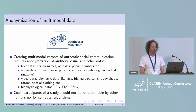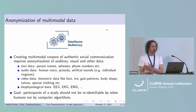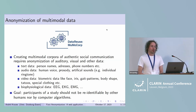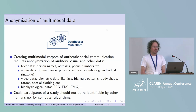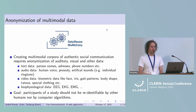Video data contains very sensitive biometric data like face data, the iris, maybe gait patterns, the body shape, maybe tattoos, or maybe special clothing. There might also be biophysiological data like EEG, EKG, and so on. I just want to talk today about anonymizing human faces.